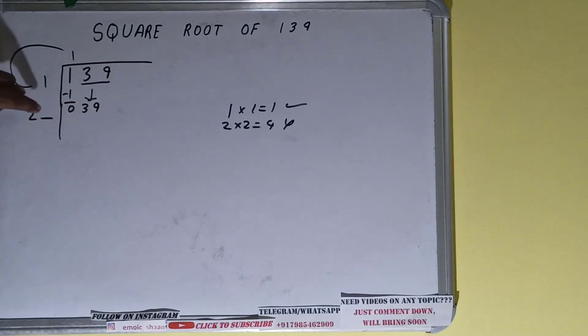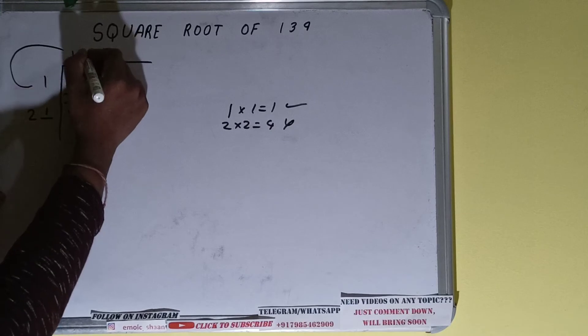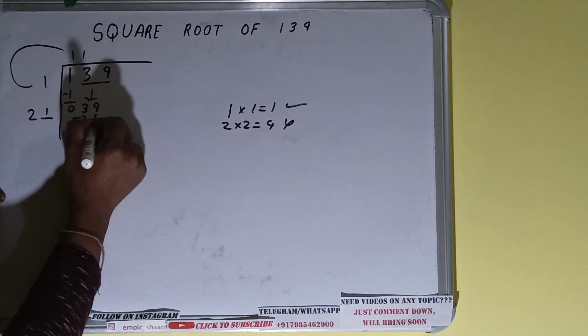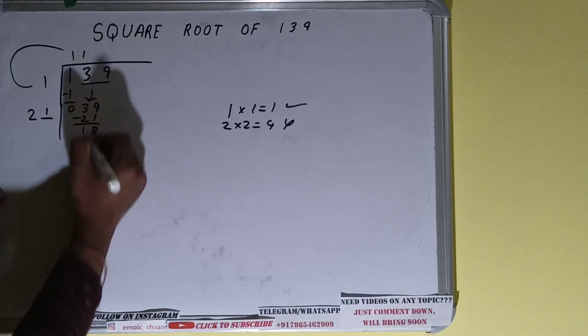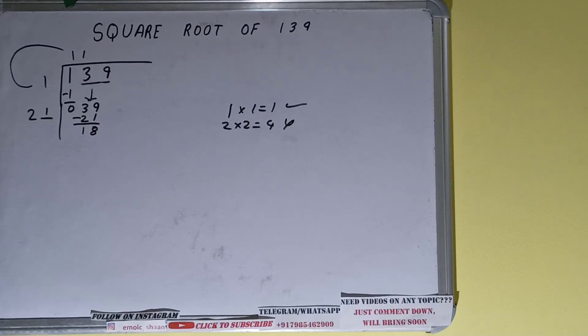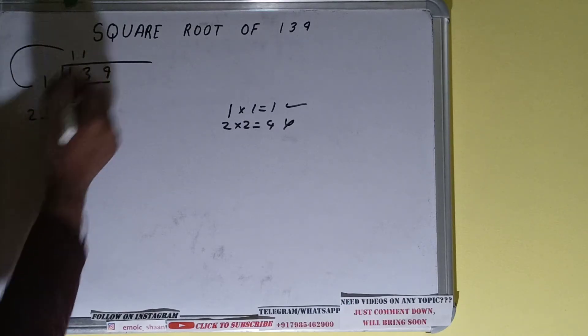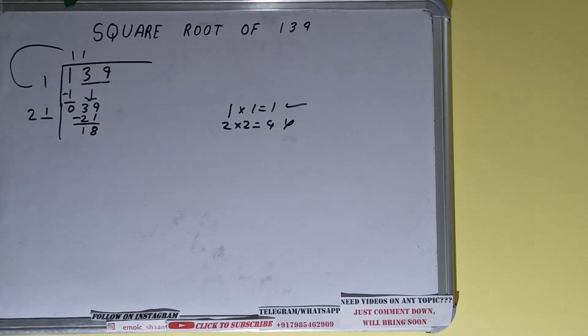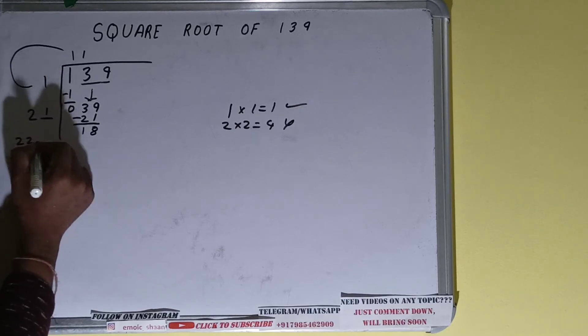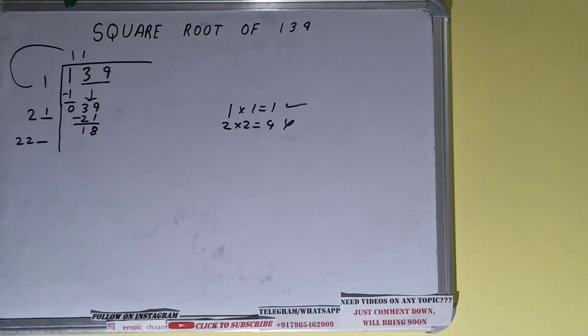The rule is whatever number we place here, we have to place here also. So one will work. 21 into 1, subtract it, will be left with 18. Now we did 21 into 1, so add both. 21 plus 1 will be 22 and one digit extra. We need to make this number bigger.